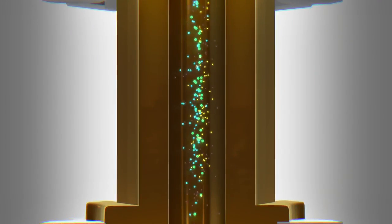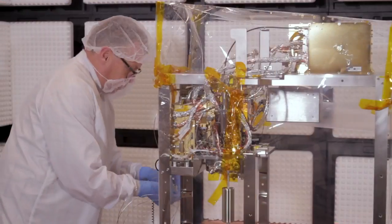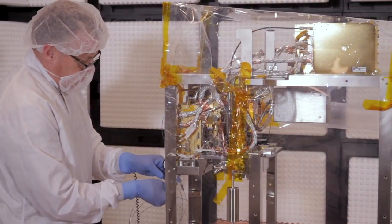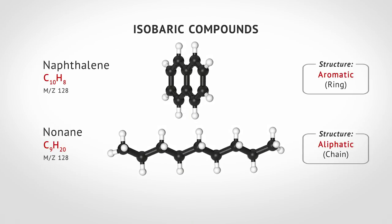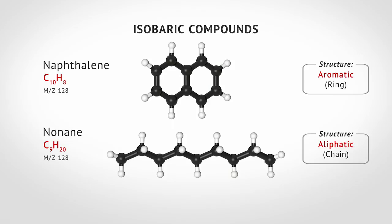Another technique is tandem mass spectrometry, or MS-MS, which identifies large molecules by breaking them apart and analyzing their fragments. By combining SWIFT and MS-MS, MOMA can determine an individual molecule's formula and its structure, both important criteria in the search for life.